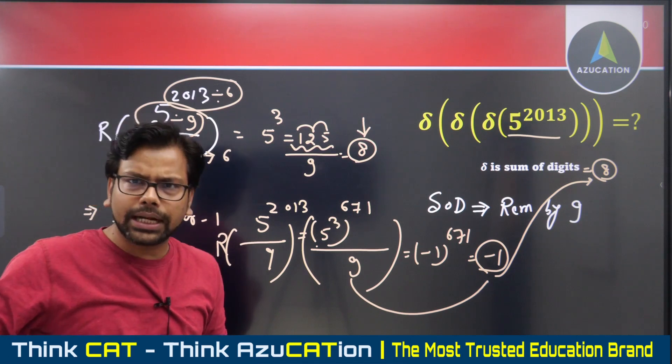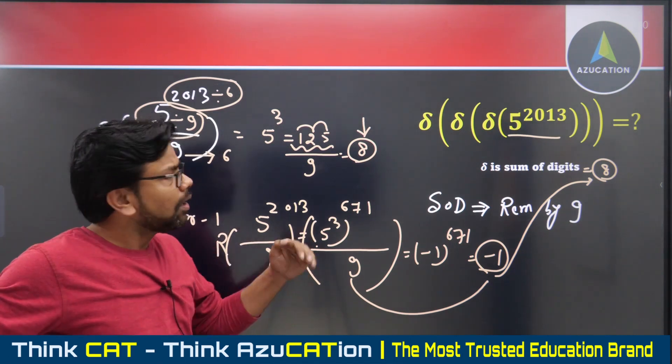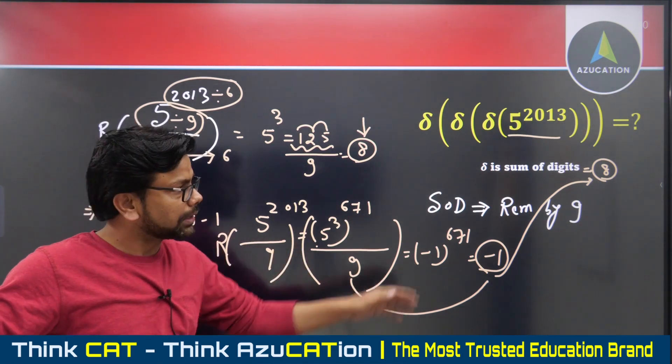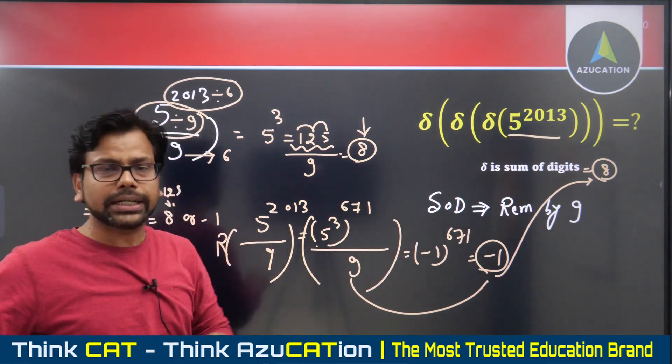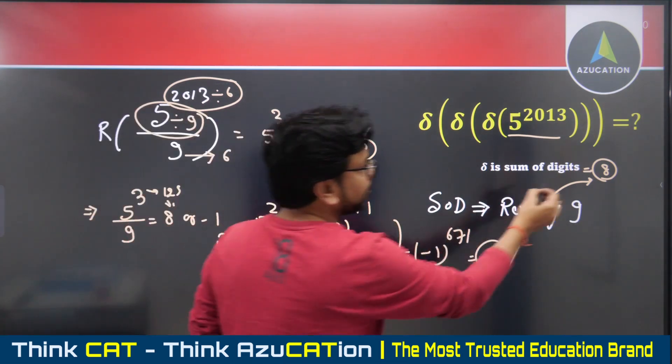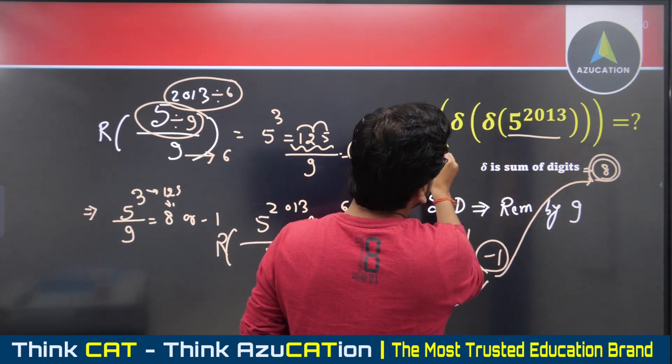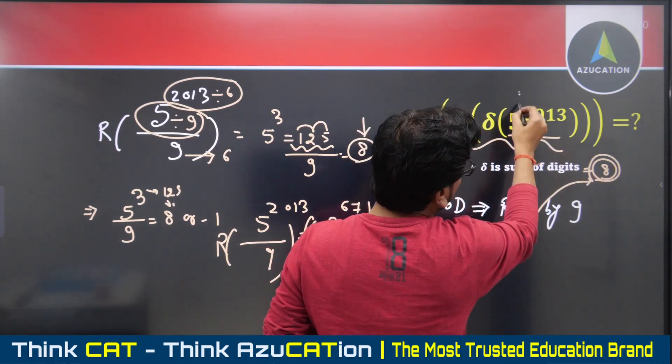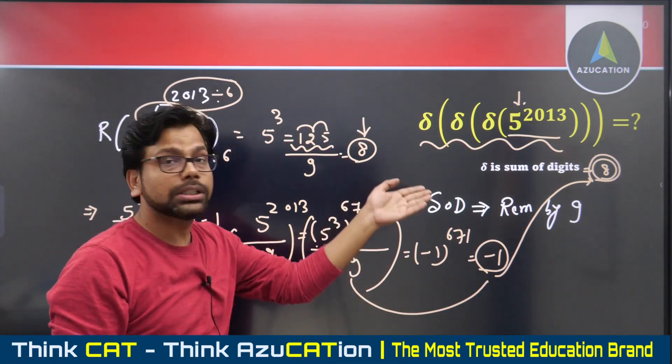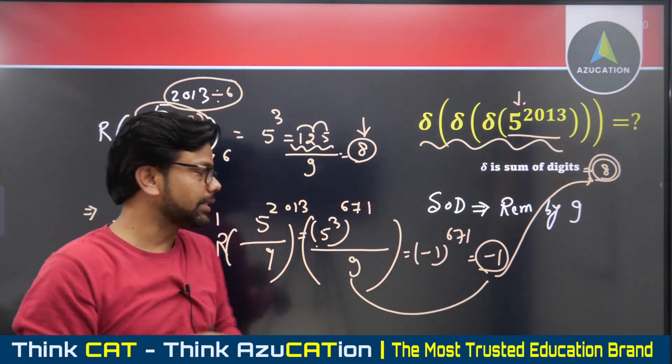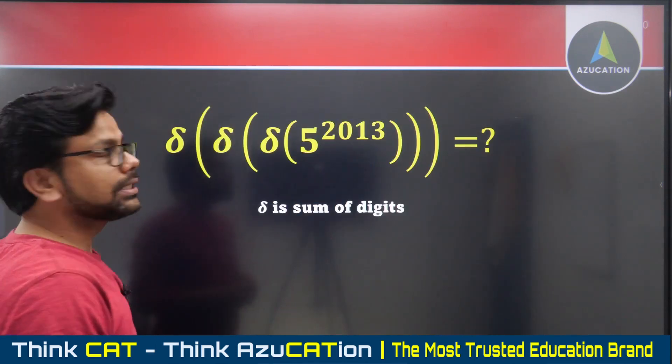Whenever you need to find sum of digits multiple times, you need to find remainder by nine. You might ask: how is this a single digit? The sum of digits could be a double-digit number, like 71 or 170. Why is it a single digit number?